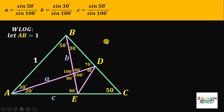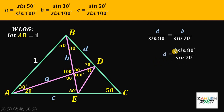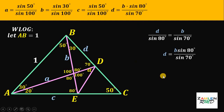Next, let this side length equal d. We will use the triangle with angles 30 degrees, 80 degrees, and 70 degrees. Using sine law: d over sine of 80 degrees equals b over sine of 70 degrees. Solving for side d, we get d equals b multiplied by sine of 80 degrees over sine of 70 degrees.